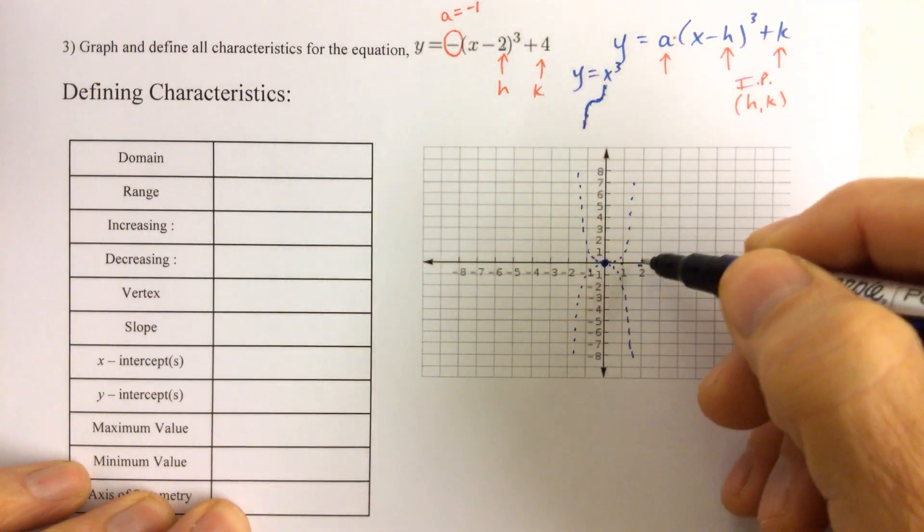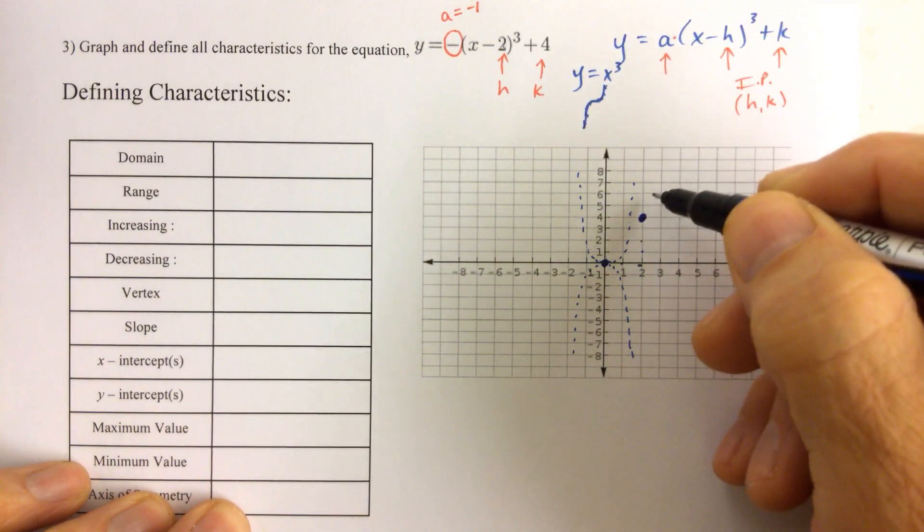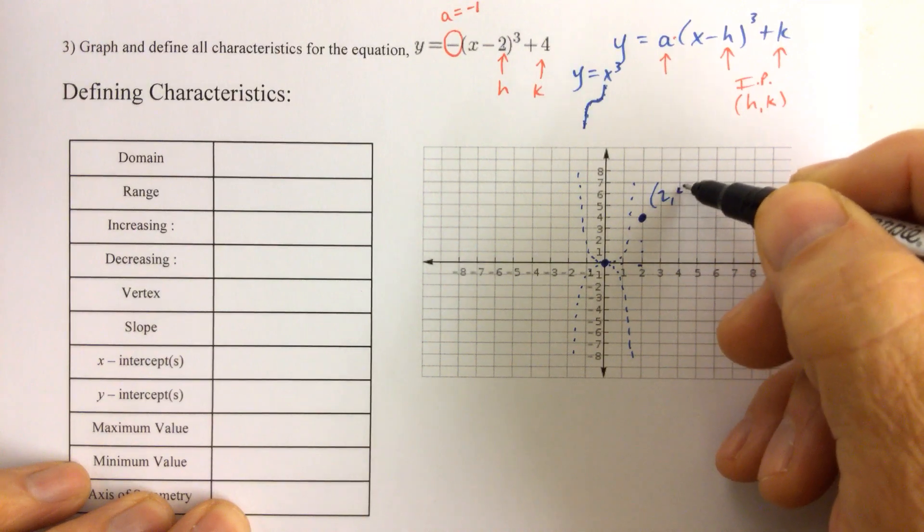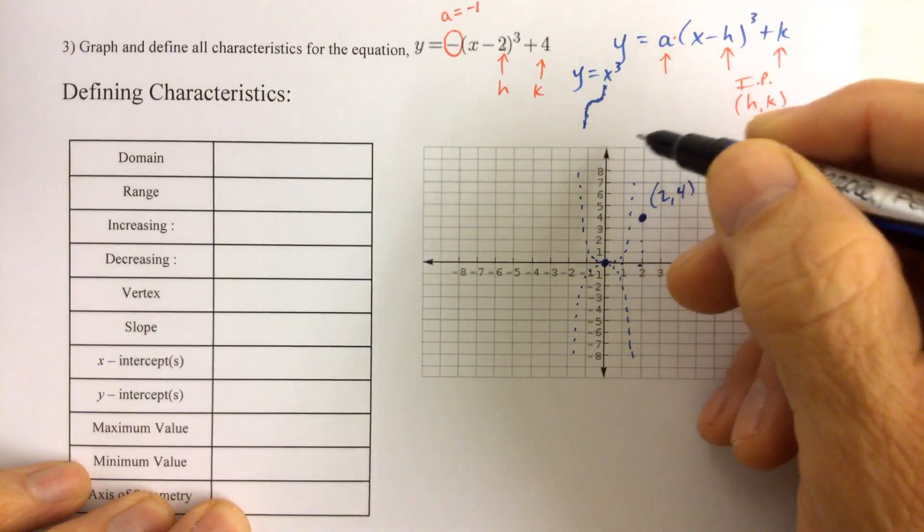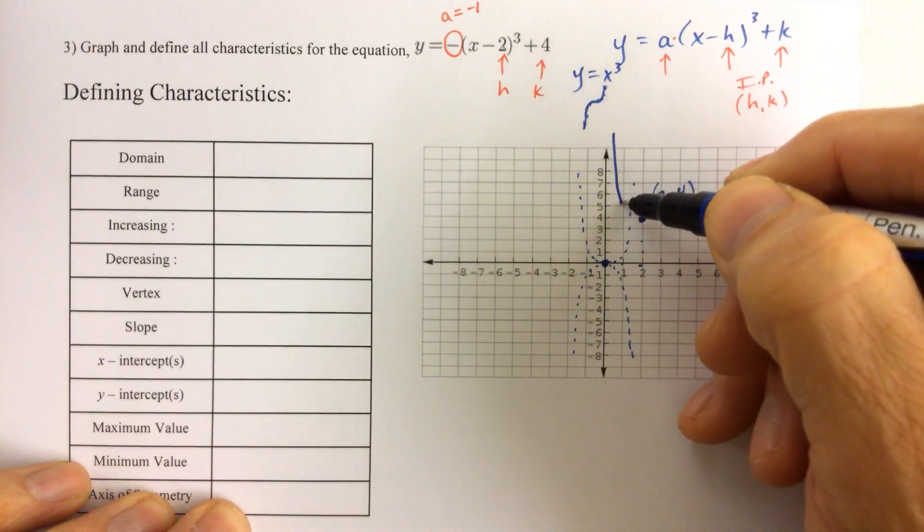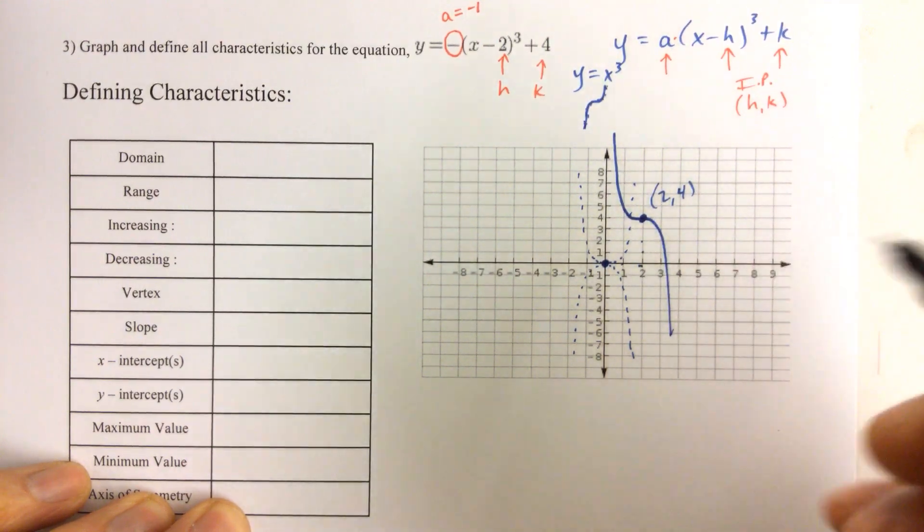The k value being four means we go up one, two, three, four. We have an hk value, and that is the inflection point that has coordinates two comma four. The graph, since a is negative, is going to be decreasing from left to right. And there's our graph.